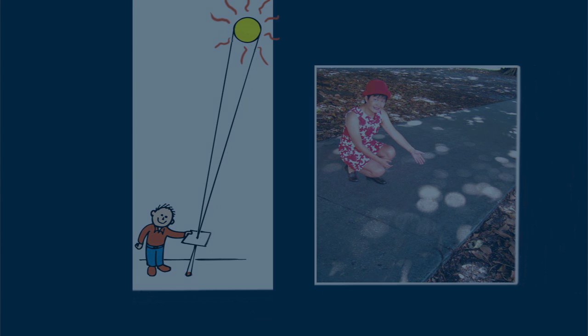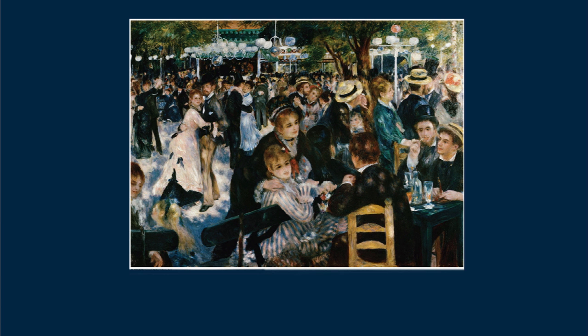Even some artists miss seeing them. But not the famous artist Renoir, as we see in this painting. Renoir has the solar images the correct size for the trees through which the images were cast.